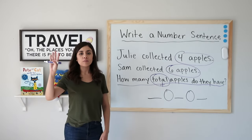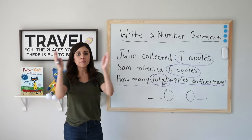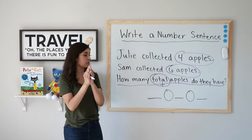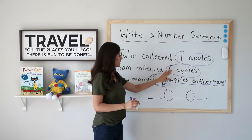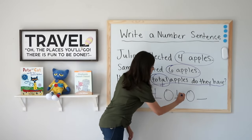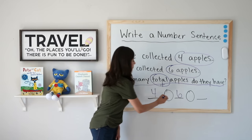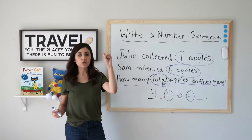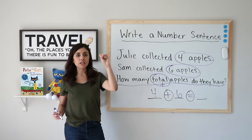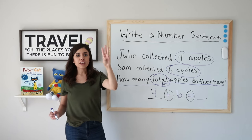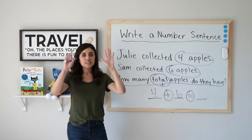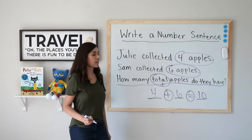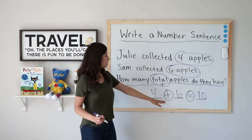So I have four apples and I have six apples and I bring them together to find my whole — that is to find my total. Let's take four and six and add them up. Four plus six equals — I have four and I'm going to jump up six: four, five, six, seven, eight, nine, ten. I have ten total apples. Ten is the sum of four plus six.